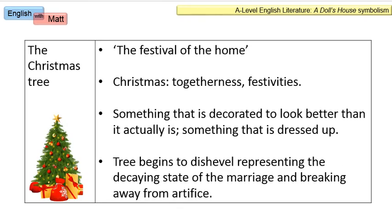The next symbol is the Christmas tree. Christmas is also known as the festival of the home, and this is significant because this is a play essentially about a home at Christmas. We think of Christmas as togetherness, festivities and family time, which makes even more shocking what Nora does in leaving at the end — even Christmas and that sense of togetherness is not enough to keep her in the home. A Christmas tree is something we decorate to make it look better than it actually is; none of us want a plain green tree. It's a form of decoration.